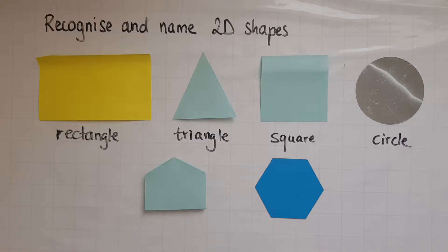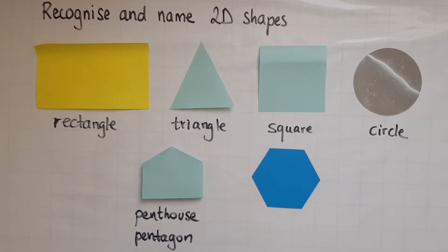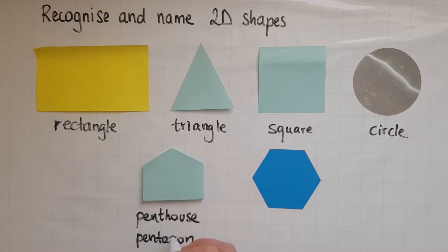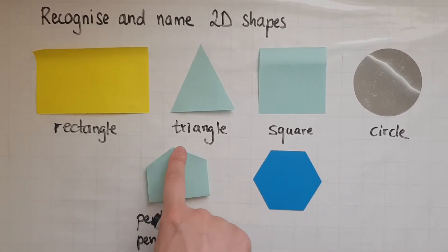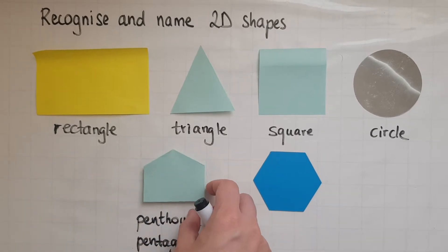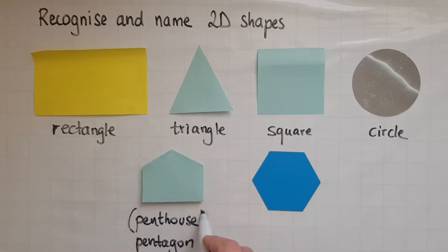So, I will move to a penthouse because the name for the shape is actually pentagon. Penthouse, pentagon. So, this is called a pentagon because it has five sides: one, two, three, four, five sides. That's why we call it a pentagon.